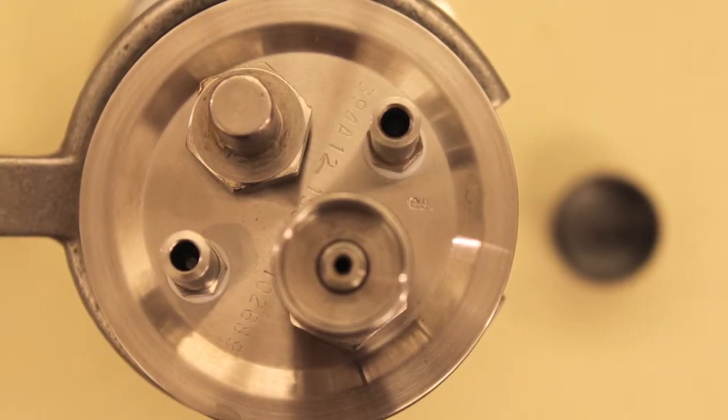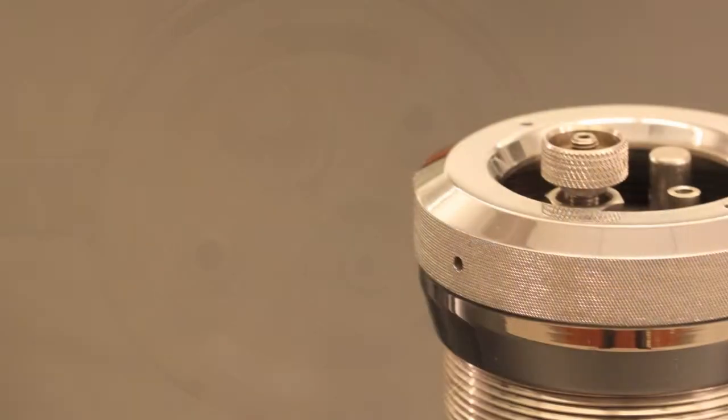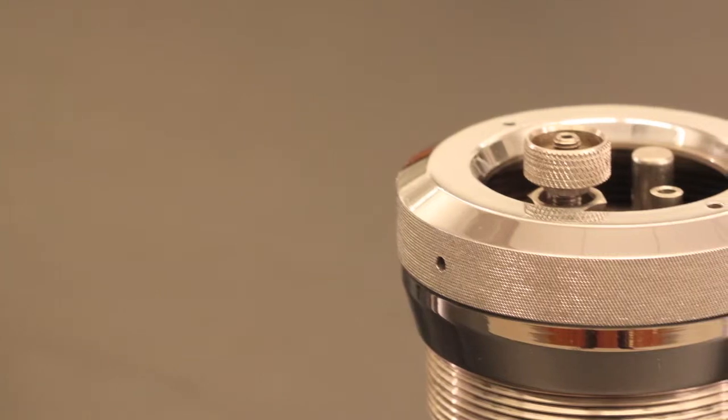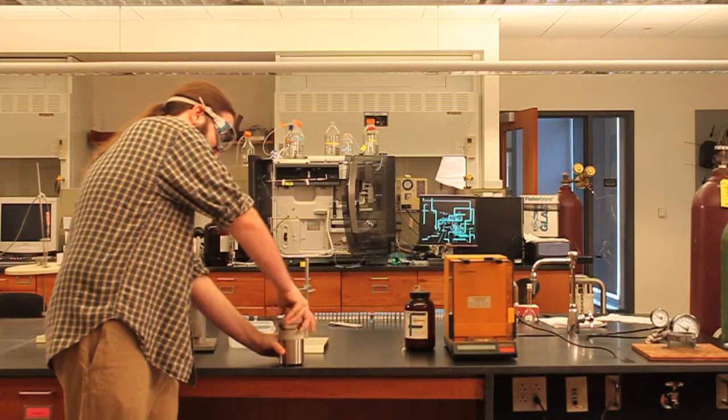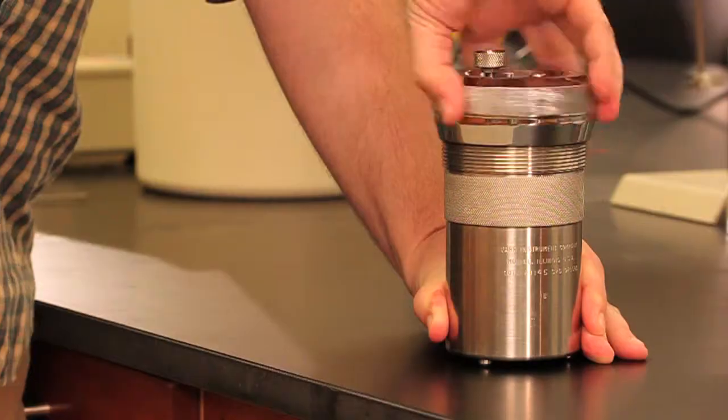Let's take a look at the bomb. When assembled, the bomb is an unimpressive closed cylinder made of stainless steel. The top is held on by a large retaining ring, which screws off.